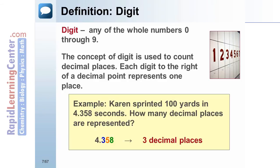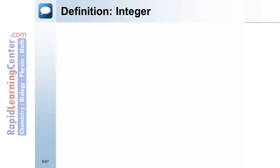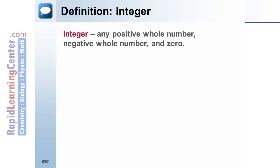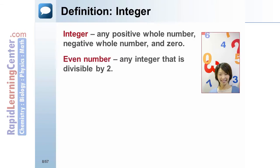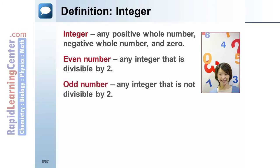This number has three decimal places because there are three digits to the right of the decimal: three, five, and eight. An integer is any positive whole number, negative whole number, or zero. An even number is any integer divisible by two; an odd number is any integer not divisible by two.